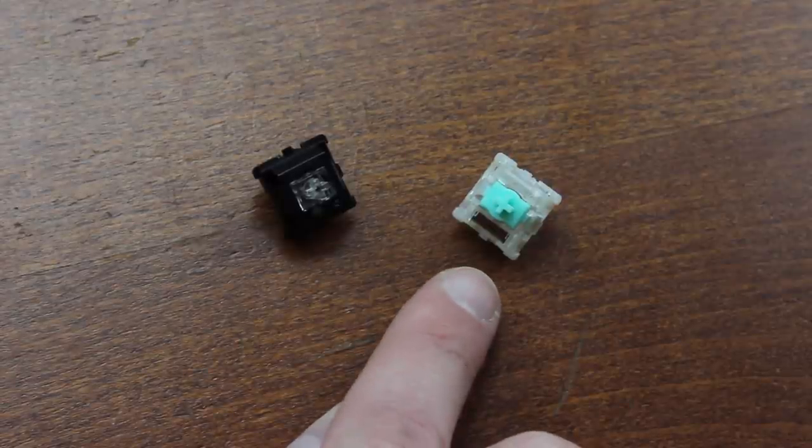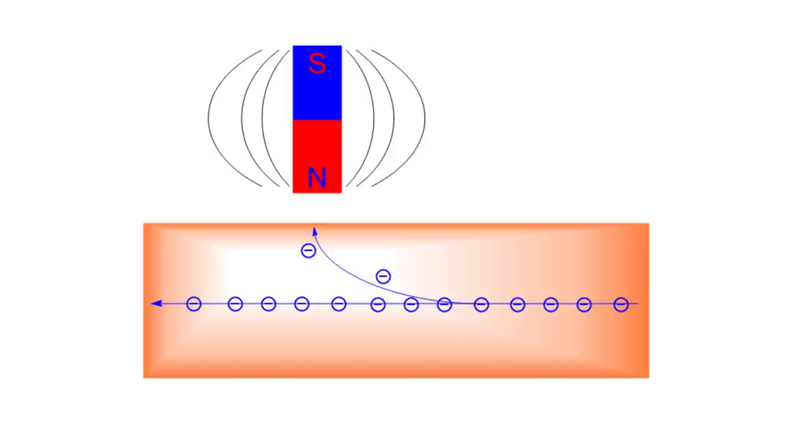So to elaborate on the working principle a little bit, if you have electrons flowing through a medium, for example a piece of copper wire, and you put a magnet on one side, it'll bend electrons from their path to the side. This is because electrons have charge and move and therefore generate an electromagnetic field which subsequently interacts with the magnet's own field.